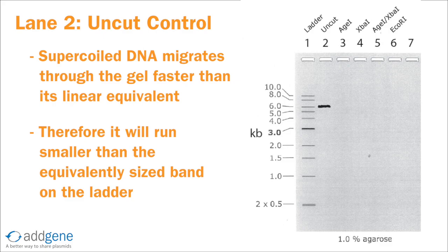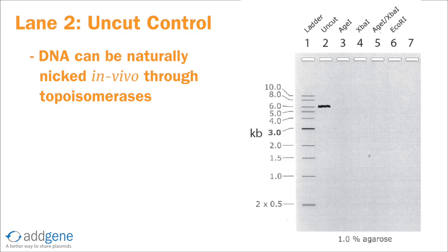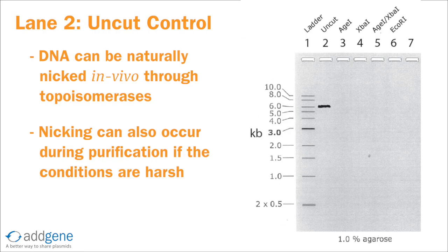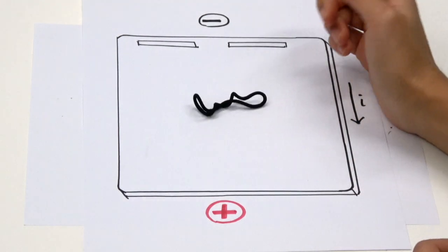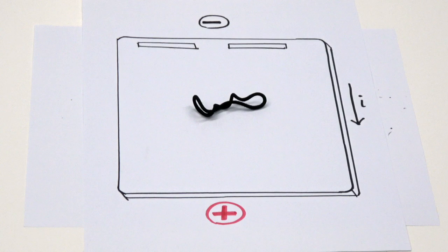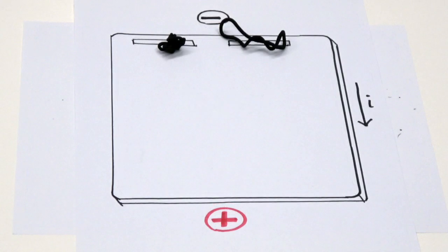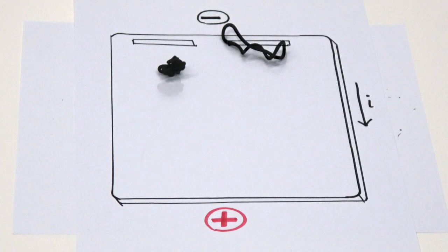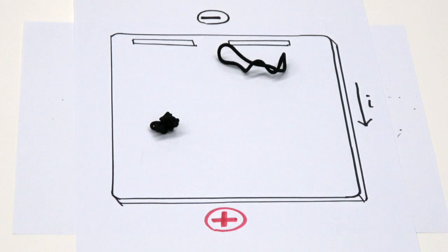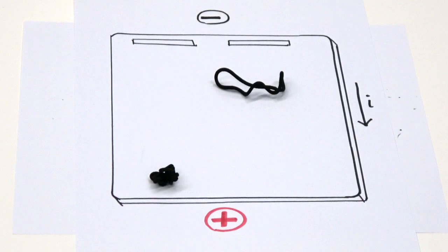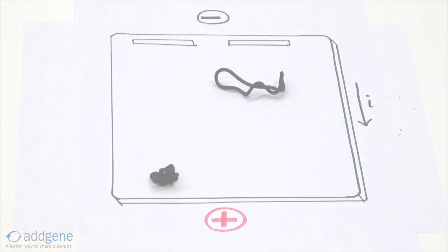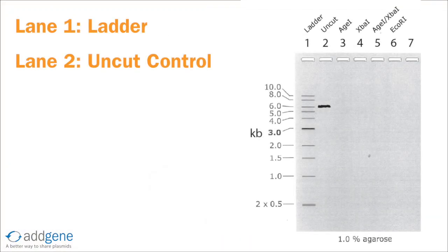Another conformation of uncut plasmid DNA is nicked. DNA can be nicked naturally in vivo through the activity of topoisomerases. DNA can also get nicked during purification if the conditions are harsh, so it's common to see nicked DNA in your uncut control. When one strand of the DNA is nicked, supercoiling is released, so the conformation of nicked DNA resembles a floppy hula hoop or a hair tie, making it relatively large. Nicked DNA is so large that as it migrates through the gel, it experiences greater resistance due to friction than even linear DNA. Consequently, nicked DNA runs a little higher than the equivalently sized band on the ladder. Since we're still talking about a 7.5 kilobase pair plasmid, let's draw the nicked DNA a little above the 7.5 kb mark.